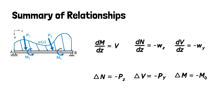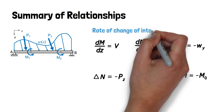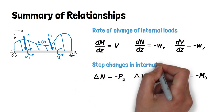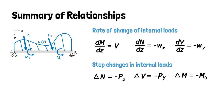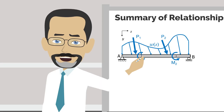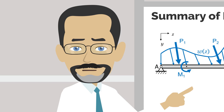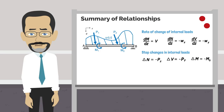Looking closely at these results, we can see two types of variations. The rate of change of internal forces is caused by distributed forces, while point forces and moments cause step changes in the internal forces and moments. This is useful because we can exploit these relationships to very quickly and easily plot internal force diagrams, which we will cover in another video. For now, I recommend looking at some of the internal force diagrams generated earlier in this course and seeing if you can recognize the presence of these relationships within them.